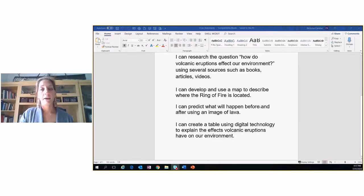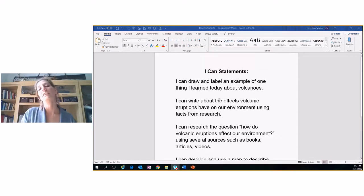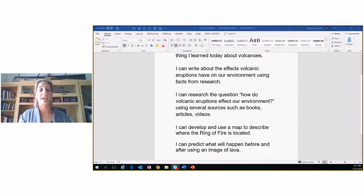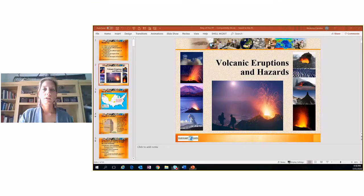I can develop and use a map to describe where the ring of fire is located. I can predict what will happen before and after using an image of lava. I can create a table using digital technology to explain the effects volcanic eruptions have on our environment. Even though it may look like a lot, they kind of all go together. You will be doing some research after this lesson of effects that volcanoes have on our environment. So pay close attention to today's lesson. I think you're going to be quite interested.